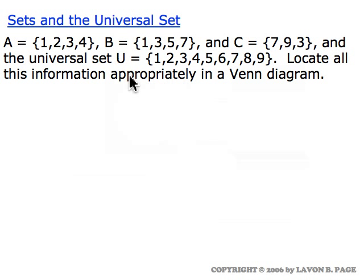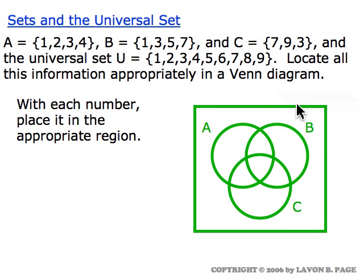Let's consider a situation where we have a universal set U including all the whole numbers from one to nine, and we have three subsets of U described as A, B, and C. Let's locate all this information appropriately in a Venn diagram. We start by drawing a picture where we have a rectangle representing the universal set, and three overlapping circles representing A, B, and C. We'll want to locate the elements of each set inside their corresponding circles, making sure that each number is inside exactly the right sets and not inside sets which it does not belong to.